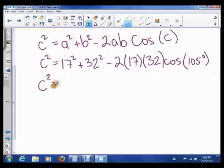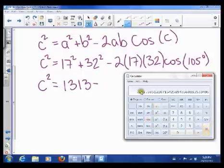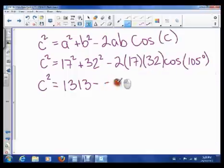So all I'm going to do is I'm going to write c squared is 1313 minus, and now I'm going to do 2 times 17 times 32 is equal to 1088. And then I'm going to do times 105 cos equals negative 281.595, which means 281.60. So I'm going to say it's negative 281.60.